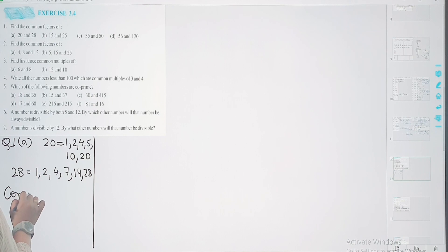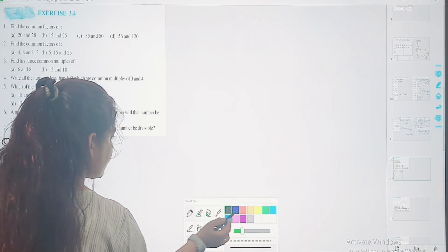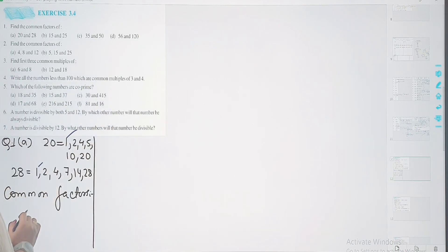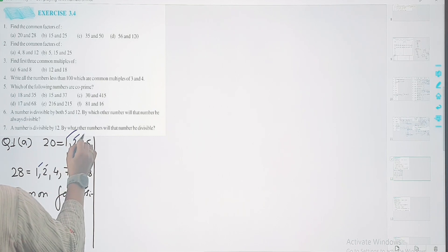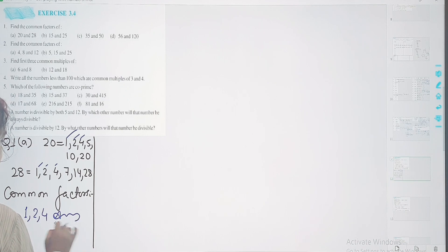So common factors humko dikh rahe hai, what are these? 1, jo dono me hai, 2 in dono me hai, 4 in dono me hai, and nothing else. So common factors are 1, 2, and 4.